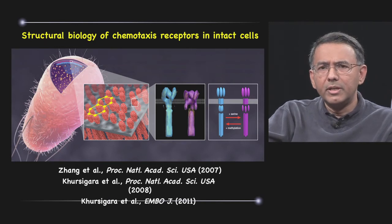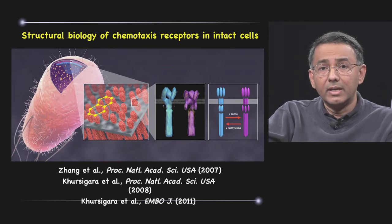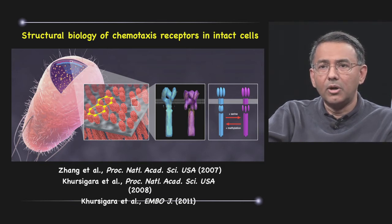This approach of determining structures by averaging the proteins present in intact viruses has also been extended to looking at intact cells in our work with E. coli. We've actually determined the structures of membrane proteins while they're still present in the context of an intact cell.